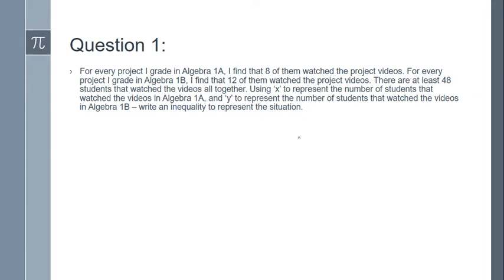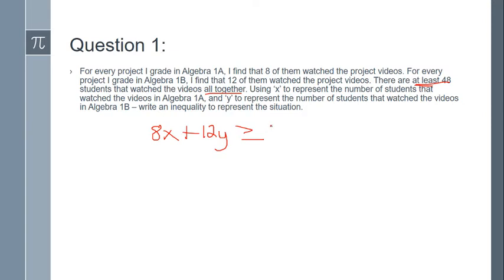So one of the things that kind of pops out to me is this word here: 'all together.' That implies a sum — if I add up the projects watched in 1a and who watched the projects in 1b and add those together, that's going to be, according to this, at least 48. That means 48 or more. So if we're using x to represent the number of students that watch the videos in 1a, then the total number of students can be represented by 8x. And if I'm using y to represent the number of students that watch the videos in 1b, and we have 12 of those for every one, then that total can be represented by 12y. And then 'all together' means if I add these all together, we have at least 48. The phrase 'at least' means greater than or equal to 48.